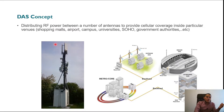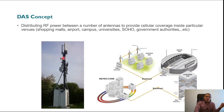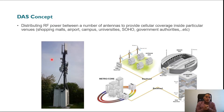Each antenna serves one sector, and each antenna may support one or multiple technologies — 2G, 3G, 4G, or 5G, or a mix. There is also a microwave dish antenna on top of the tower, responsible for transmitting traffic from one site to another or to the BSC, related to the network architecture.